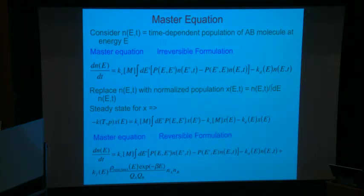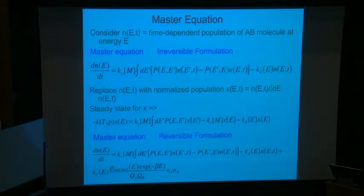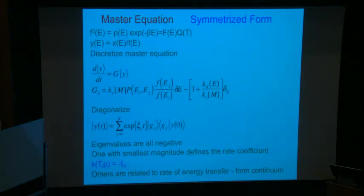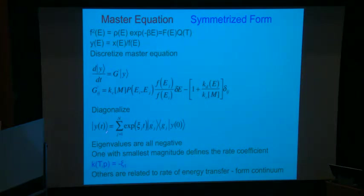You write the master equation as a continuum expression for populations N(E), then when you solve it you turn the continuum into a grid and solve numerically. It ends up being a linear equation; you diagonalize it and find the eigenvalues and eigenvectors. The lowest eigenvalue correlates with the rate constant. You can represent your populations in terms of the eigenvectors and the projections of starting conditions — it's quite straightforward. For implementation you need to calculate the collision rate.